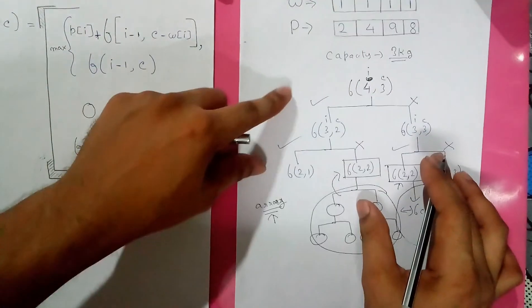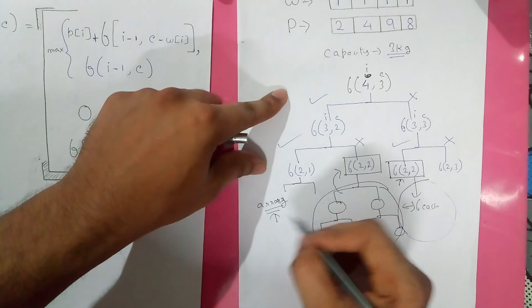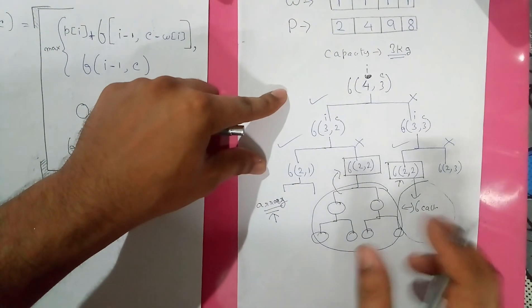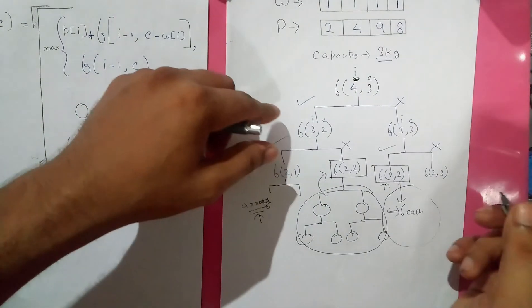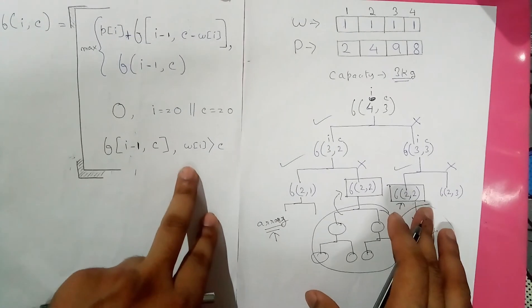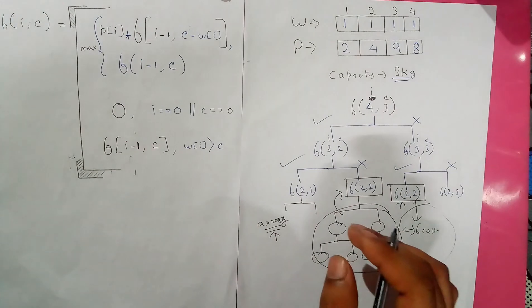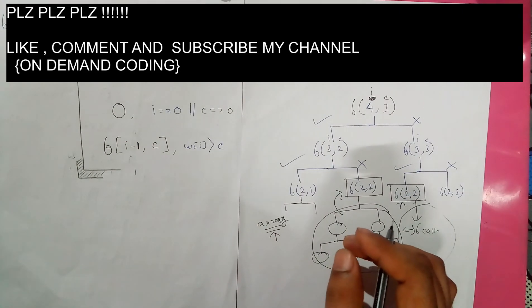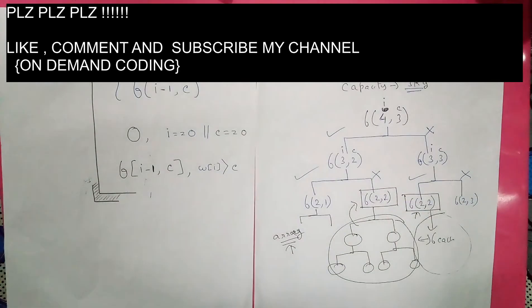I have not fully expanded the entire tree here because that would take much more time; my intention was to show you the overlapping sub-problems. In upcoming videos I will show the complete code for the 0/1 Knapsack problem. If you liked this video, please like, comment your views, and subscribe to my channel. Thank you.